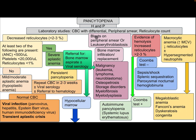If there are blasts on peripheral smear or leukoerythroblastosis, patient needs bone marrow evaluation. This could be bone marrow infiltration or replacement. Differential diagnosis includes malignancy, leukemia, lymphoma, neuroblastoma, osteopetrosis, storage disorder, myeloproliferative disorder, or myelodysplasia.